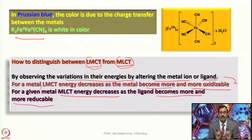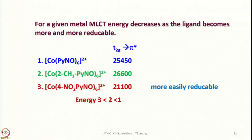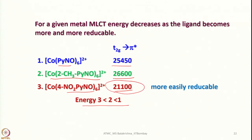For a given metal, MLCT energy decreases as the ligand becomes more and more reducible. Looking at pyridine N-oxide, there is a T2G → π* transition near 25,450 cm−1. Where the ligand is more easily reducible, you can see the energy decreasing — this shows the impact of ligand structure on MLCT.